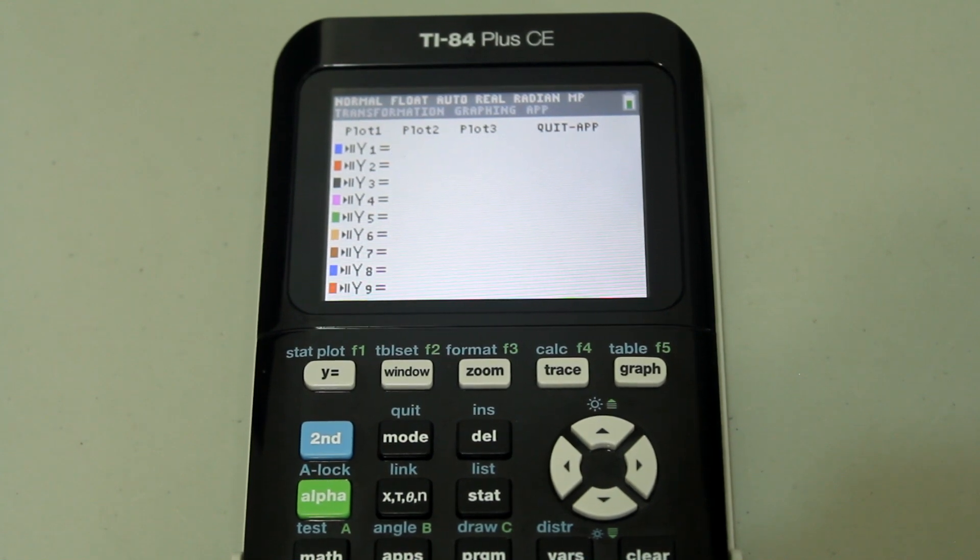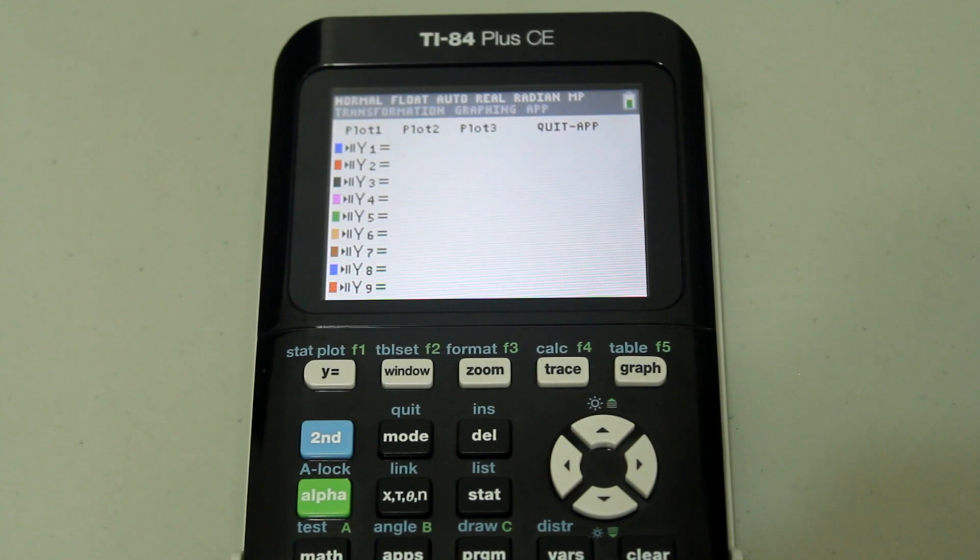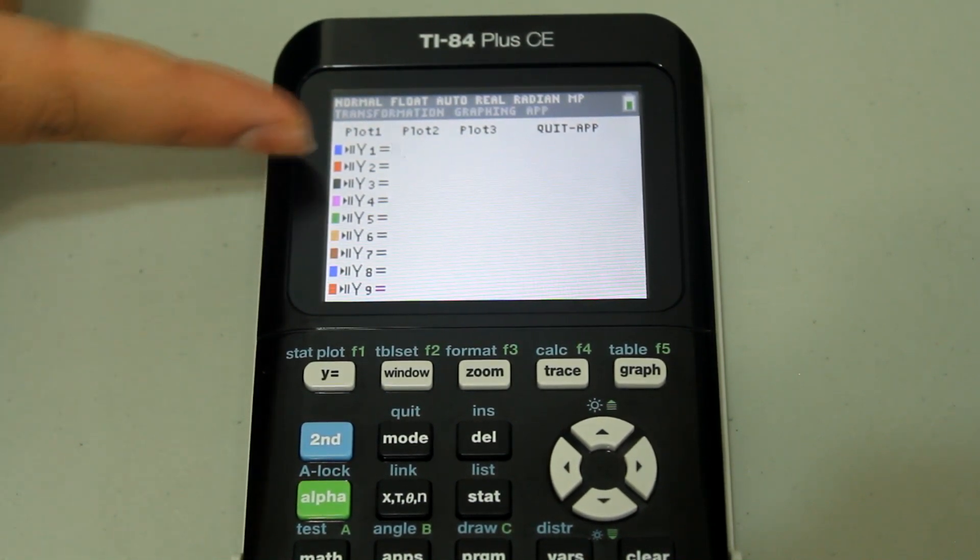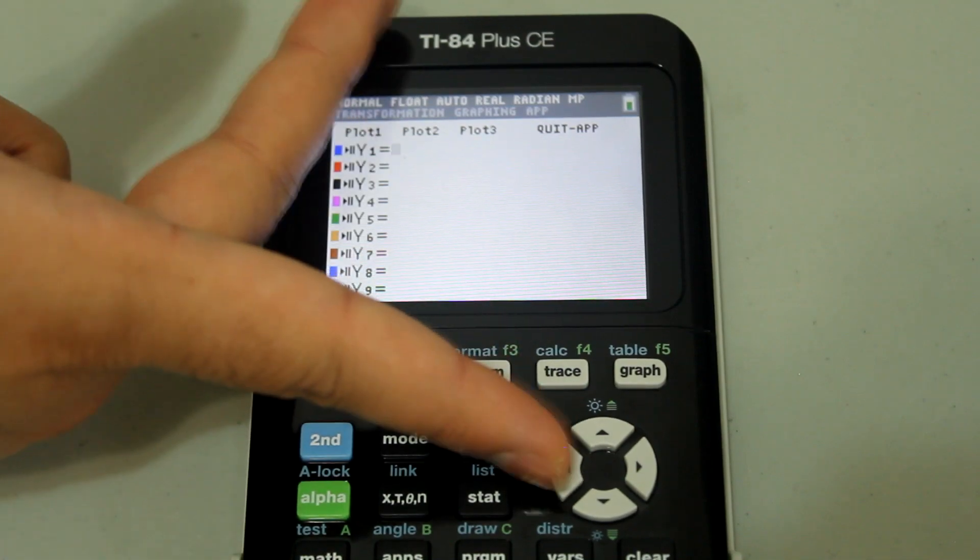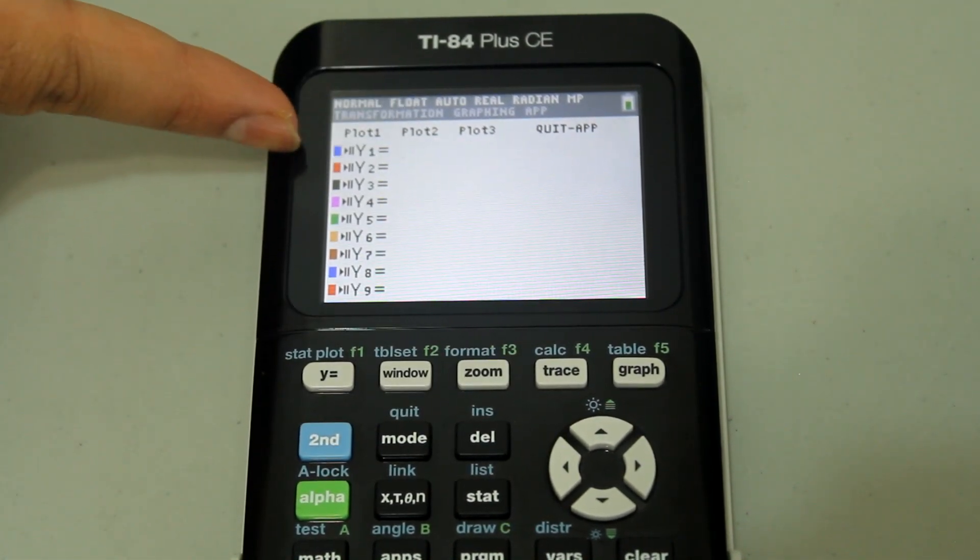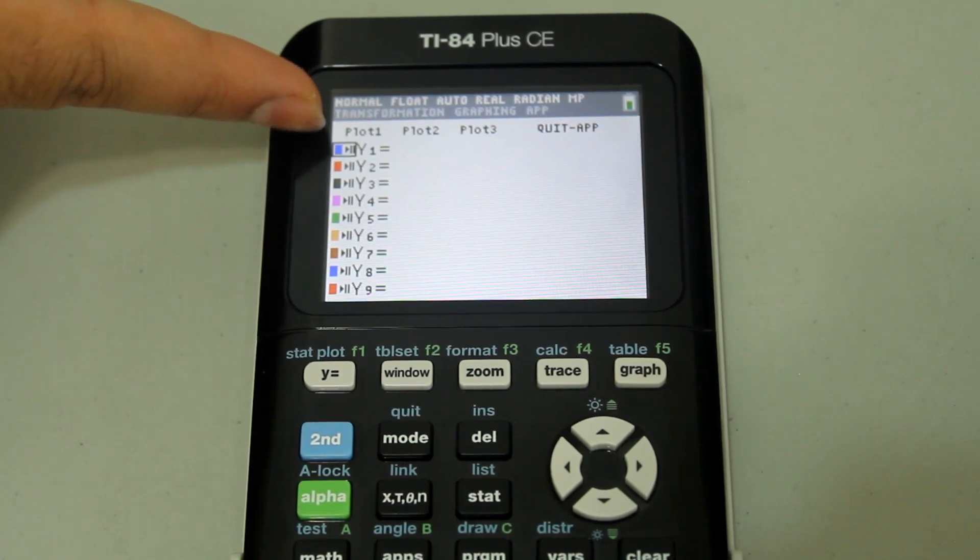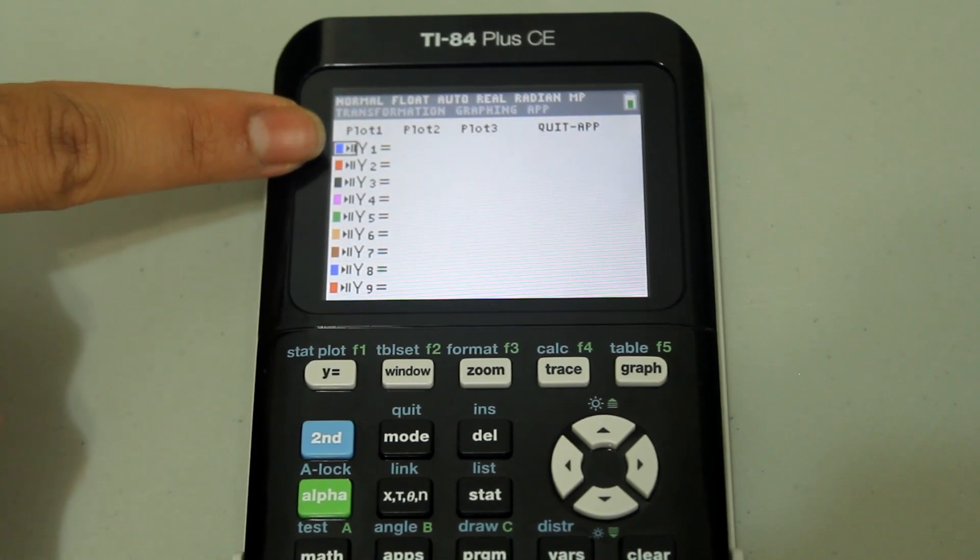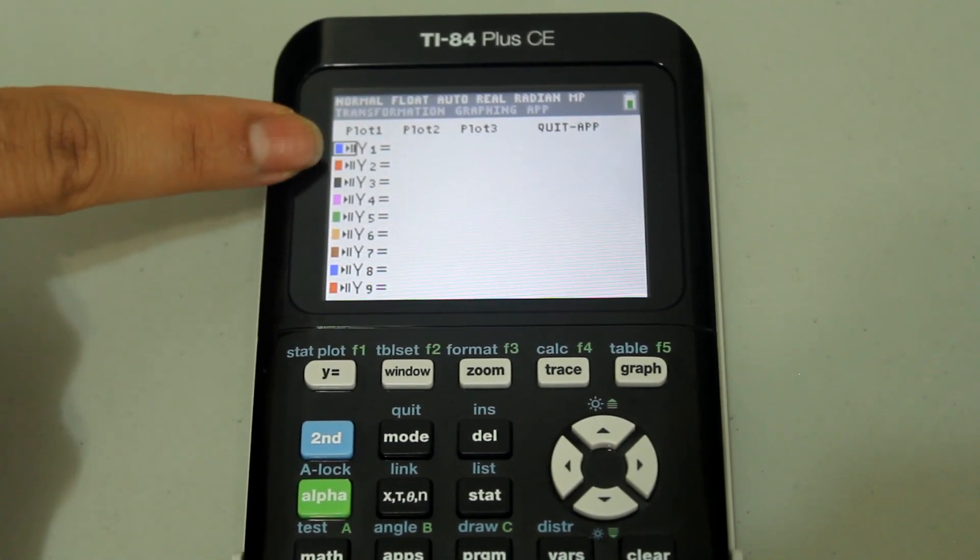I mentioned that I would address a common problem that you could face while trying to graph. Some of you may have a screen that looks like this when you go into the y equals option. And when you use the left arrow, instead of getting a rectangular box flashing around the entire y equals option, you get the rectangular box flashing around just the color and then there's two straight lines with the right arrow.